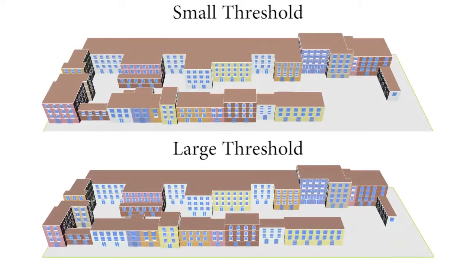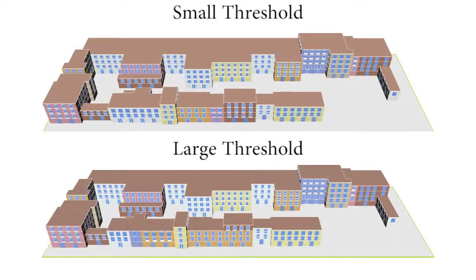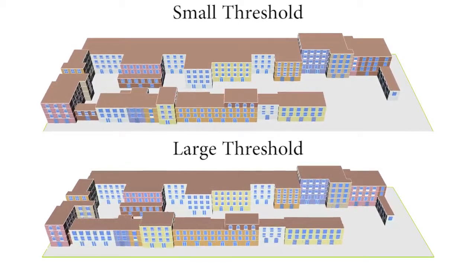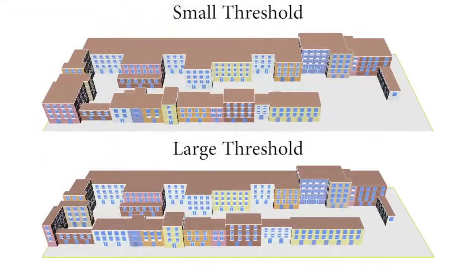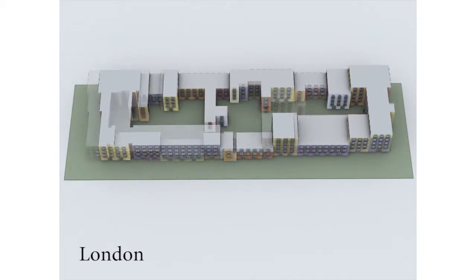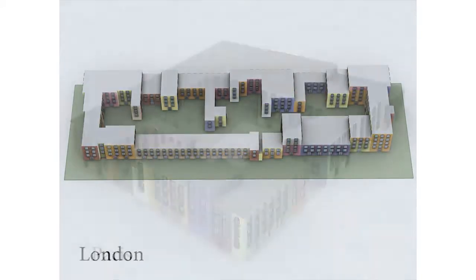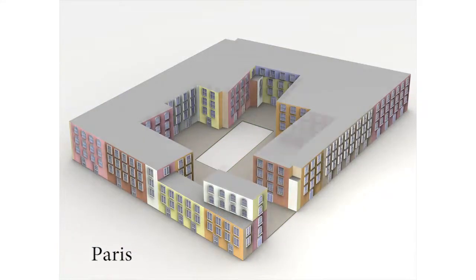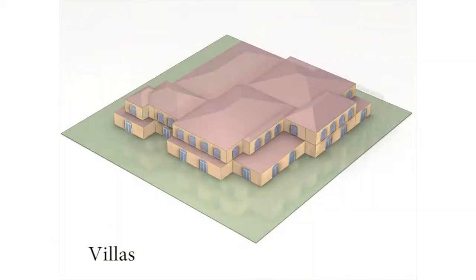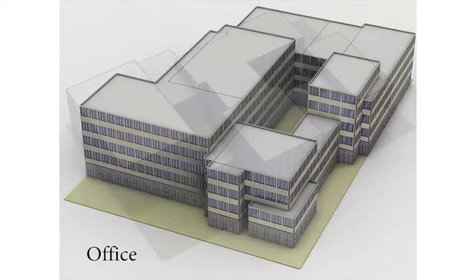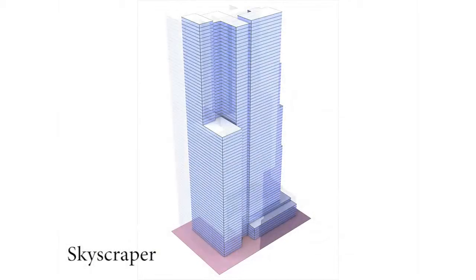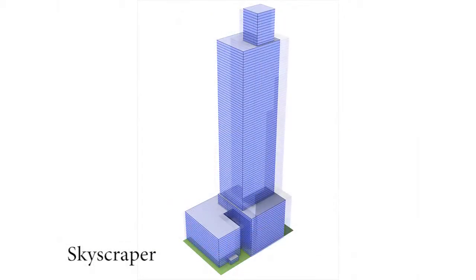We show the effect of varying thresholds for the input set of constraints on the resultant layout variations. We now present further examples. Thank you.